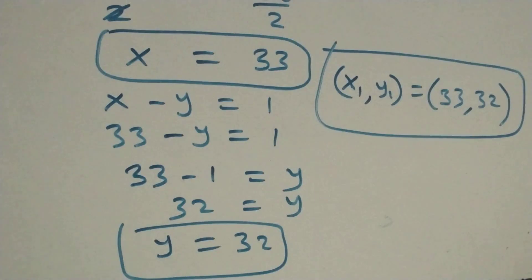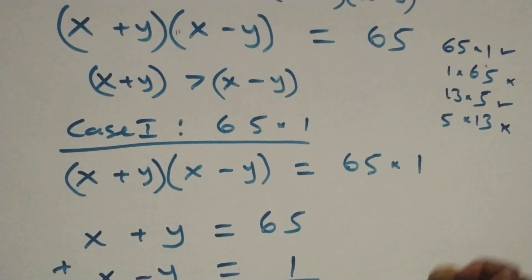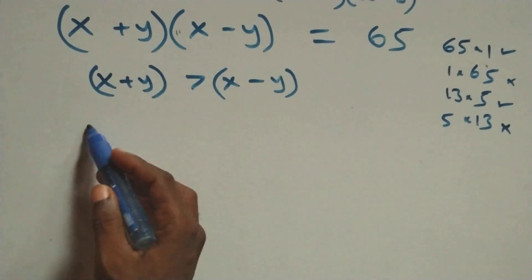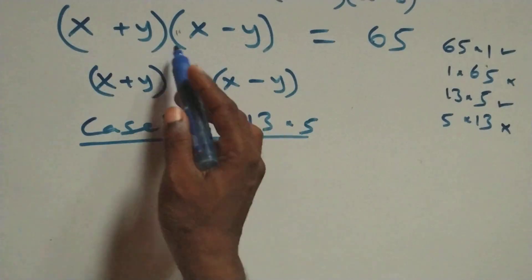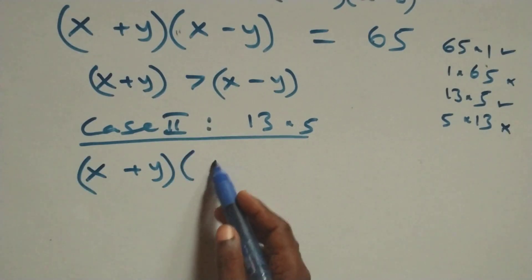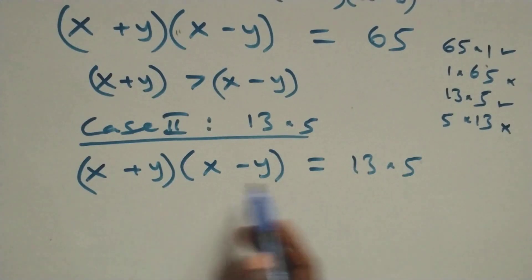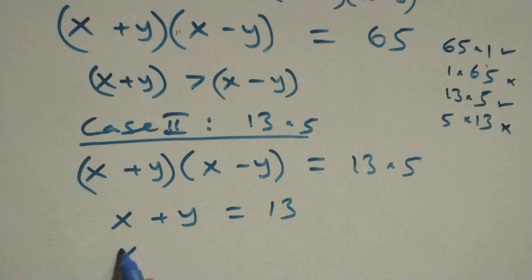Now for Case 2, using the factor pair 13 times 5. The equation (x+y)(x-y) equals 13 times 5, so the first bracket gives x plus y equals 13, and the second bracket gives x minus y equals 5.